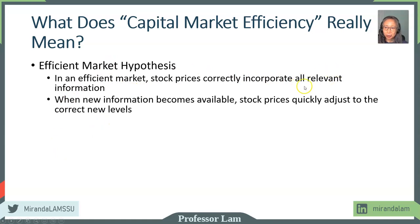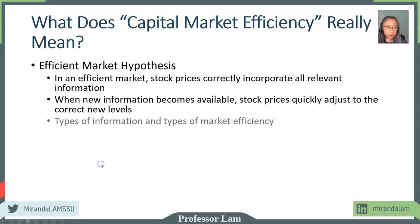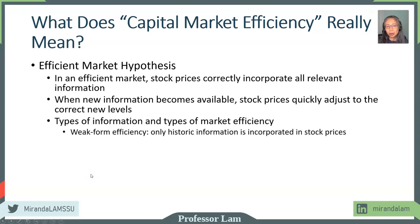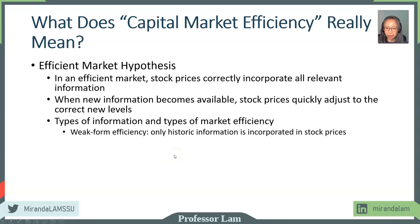A natural question then follows: what do we mean by all relevant information? There are different types of information and some people classify the market's efficiency based on that. A weak form efficient market suggests that stock prices only incorporate historic information, so things like last year's earnings, last year's stock price, last year's trading volume, and so forth.